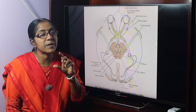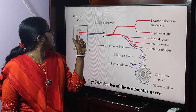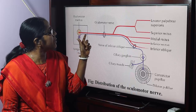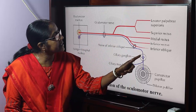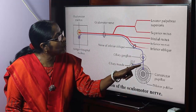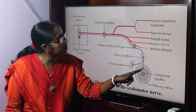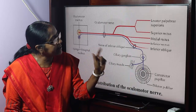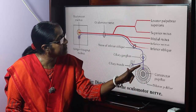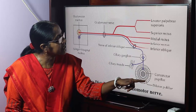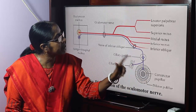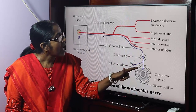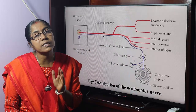This is the accommodation reflex. These are the nuclei of the oculomotor nerve — the main motor nucleus and the Edinger-Westphal nucleus. This is the ciliary ganglion. This is the iris, which has two muscles: the constrictor pupilli, supplied by parasympathetic fibers, and the dilator pupilli, supplied by sympathetic fibers. The ciliary nerve supplies the ciliary muscles and constrictor pupilli. The accommodation reflex is now complete.